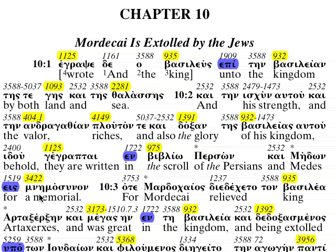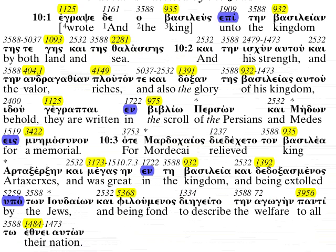Behold, gegrapte — they are written — in vivlio, a Bible or scroll in this case, of the Persians and Medes, which is today Iran. For a minimosinon, a memorial — we mentioned before, m-n, the mi-ni-upsilon. When you see that at the beginning of these words, it has something to do with remembrance, remembering, memorial in this case. Verse 3.